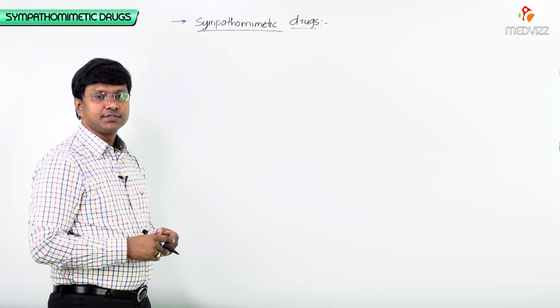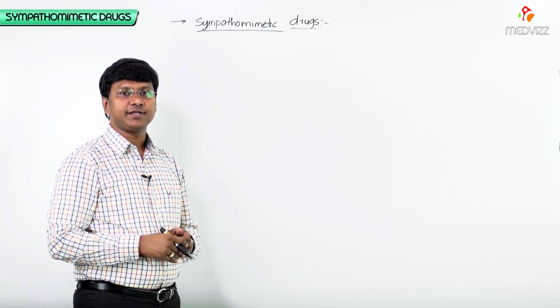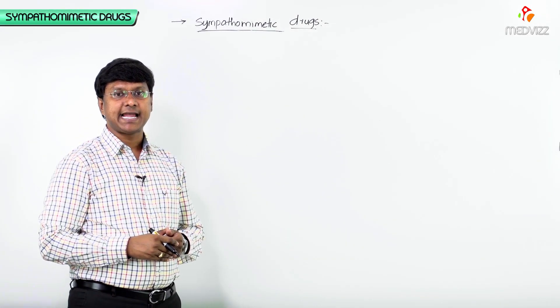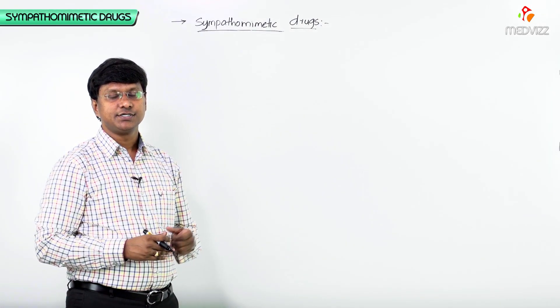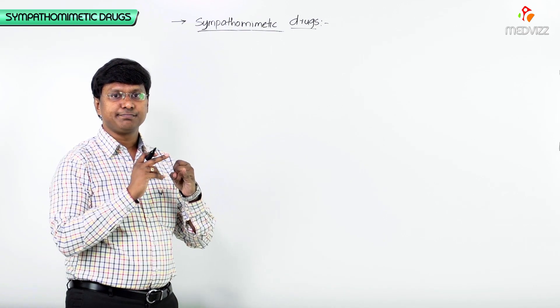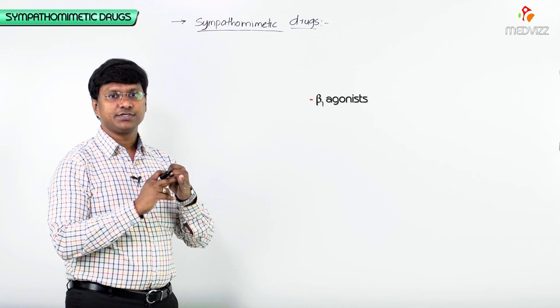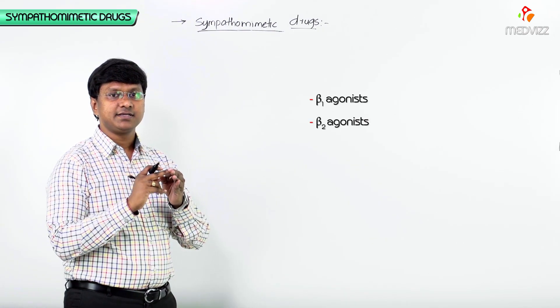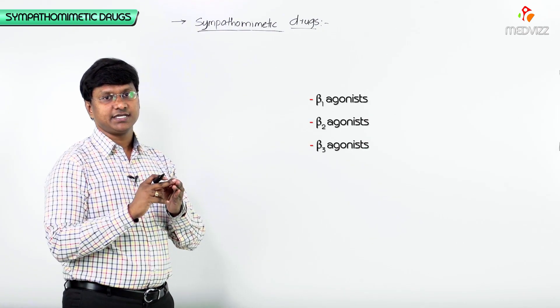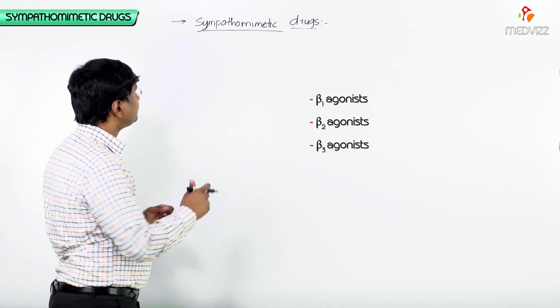Let me discuss the sympathomimetic drugs which are acting on the beta receptors. We have some beta1 agonists, then we have beta2 agonists, and then the beta3 agonists.